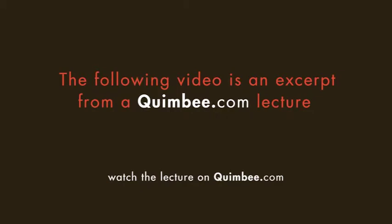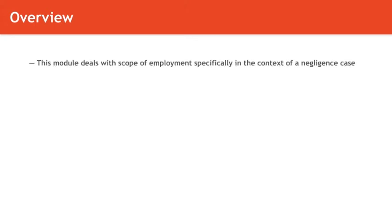Scope of employment. In the last module, we went over the first requirement in order for the boss to be held liable for the torts of the employee — that is, that a master-servant relationship must exist. That's not always and exclusively an employer-employee relationship, but most of the time it is. For purposes of this lecture, we'll use the term employee and servant interchangeably.